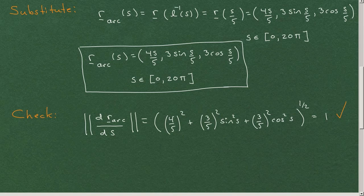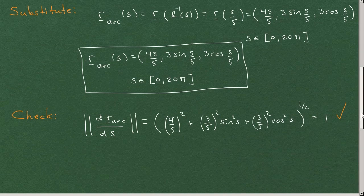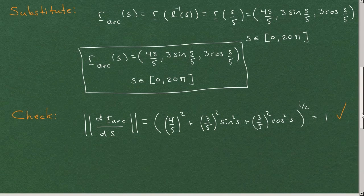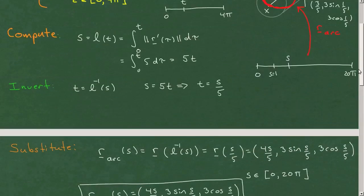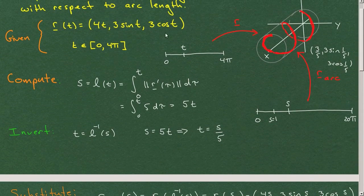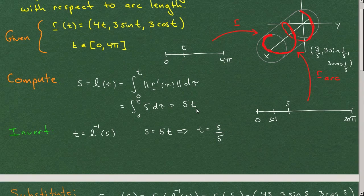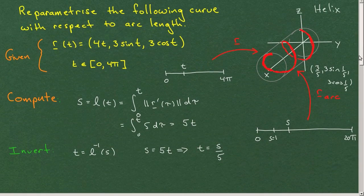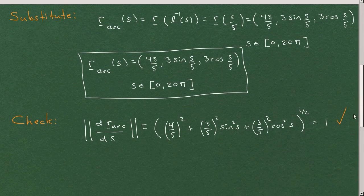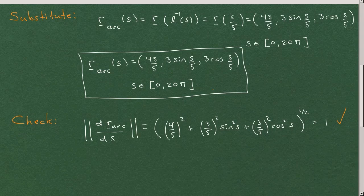So that's a typical problem in reparametrizing a curve by arc length. It's always the same set of steps. You're given a parametrization. You have to compute this. The hard part is inverting. In this case, inverting was easy. You simply take the reciprocal, and then you substitute back in to get your parametrization in terms of arc length.